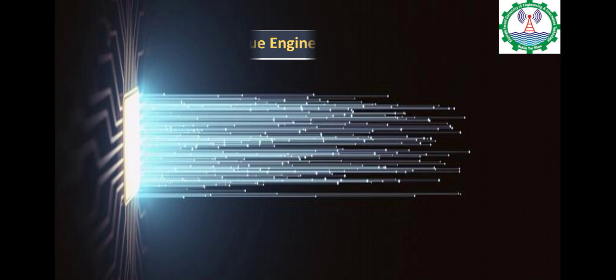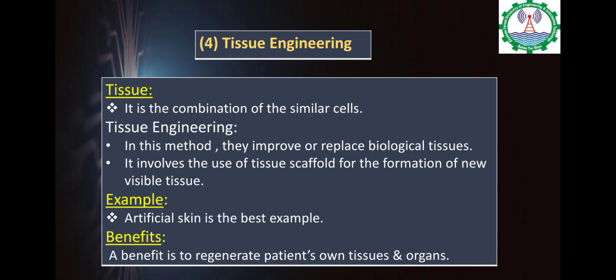Number 4: Tissue Engineering. What is tissue? It is a combination of similar cells. Tissue engineering is a method or technique where tissues are replaced and improved. We use these techniques to grow new viable tissues. For example, artificial skin is one example. The benefit is that patients with damaged tissues and organs can have them regenerated. These were our four applications.